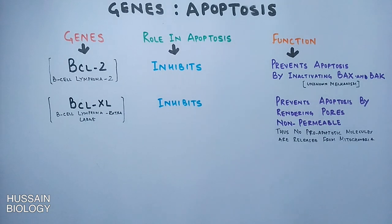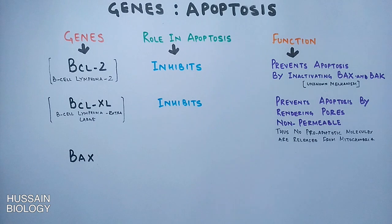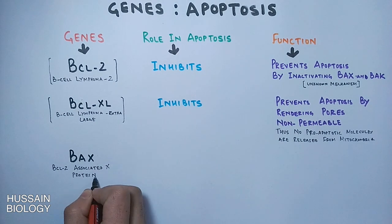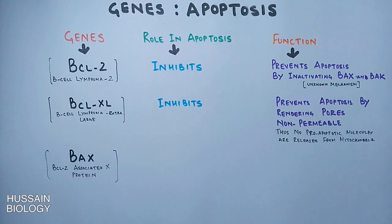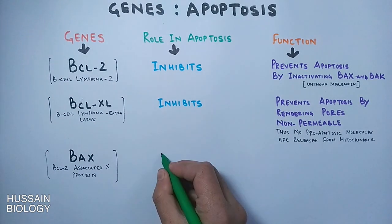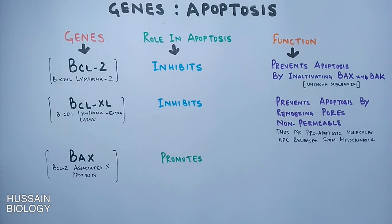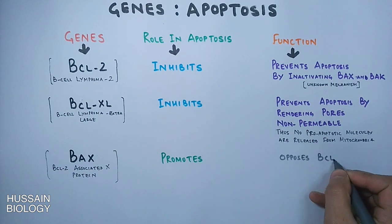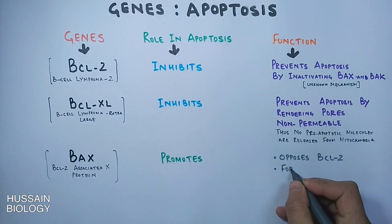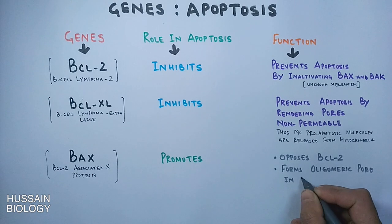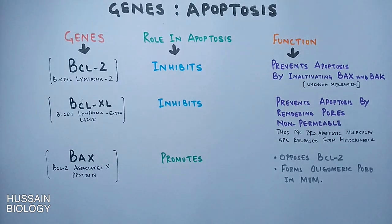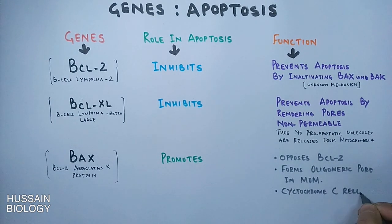Then we have the BAX gene — BCL-2 associated X protein. Unlike the above two genes, it promotes apoptosis, making it a pro-apoptotic gene. Its function is to oppose the function of BCL-2. It forms oligomeric pores in the mitochondrial outer membrane, thereby releasing pro-apoptotic factors like cytochrome c.